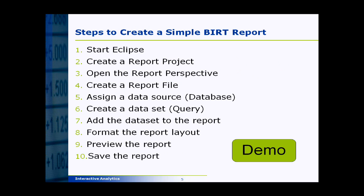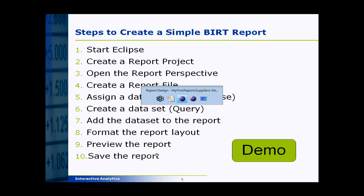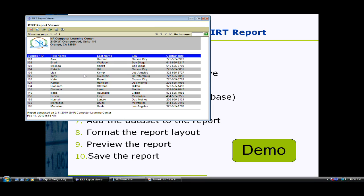So what are the steps involved in creating a BIRT report? First, start Eclipse. Once started, create a report project and open it in the report perspective. A project can have one or more report files. Create a report file, connect to a database, and create a query for your results — that's the dataset. Add the dataset to your report, preview it, change the format or layout, and once you're satisfied, save the report.